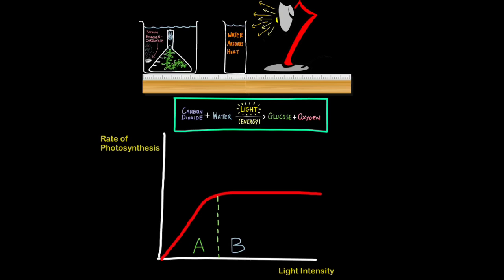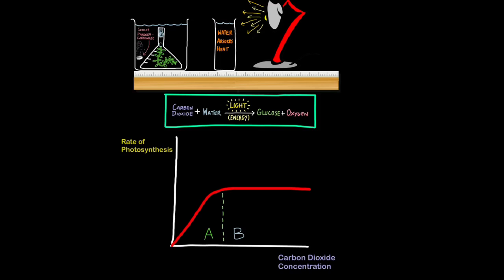In other words, something else is now the limiting factor. It could be carbon dioxide, it could be water, it could be temperature. So now if we look at carbon dioxide concentration, we get exactly the same pattern. Remember that carbon dioxide is one of the raw materials needed to drive photosynthesis. So as we increase carbon dioxide concentration, the rate of photosynthesis goes up. So over region A, carbon dioxide is the limiting factor. After a while, the rate of photosynthesis levels off.